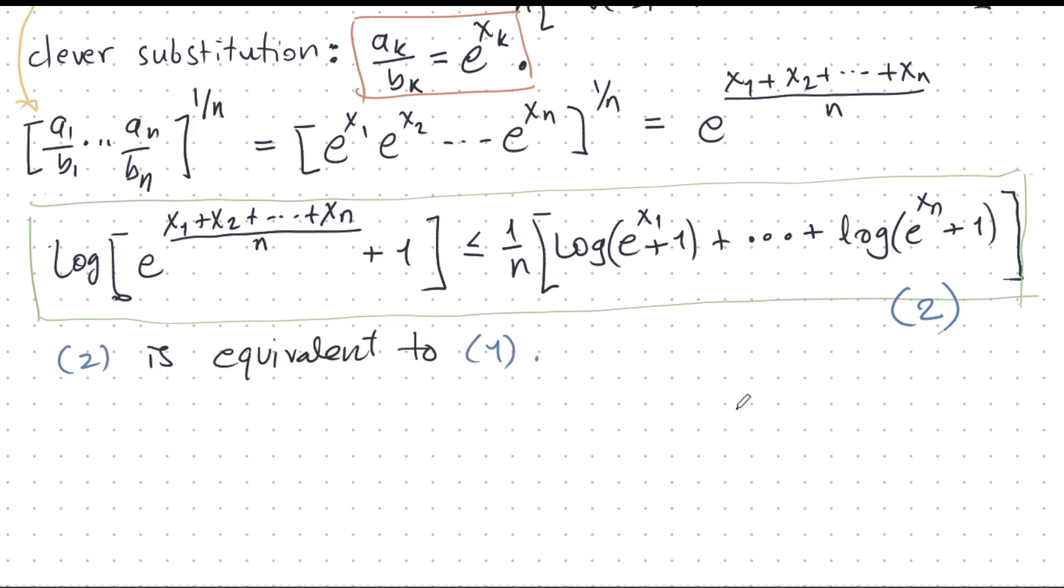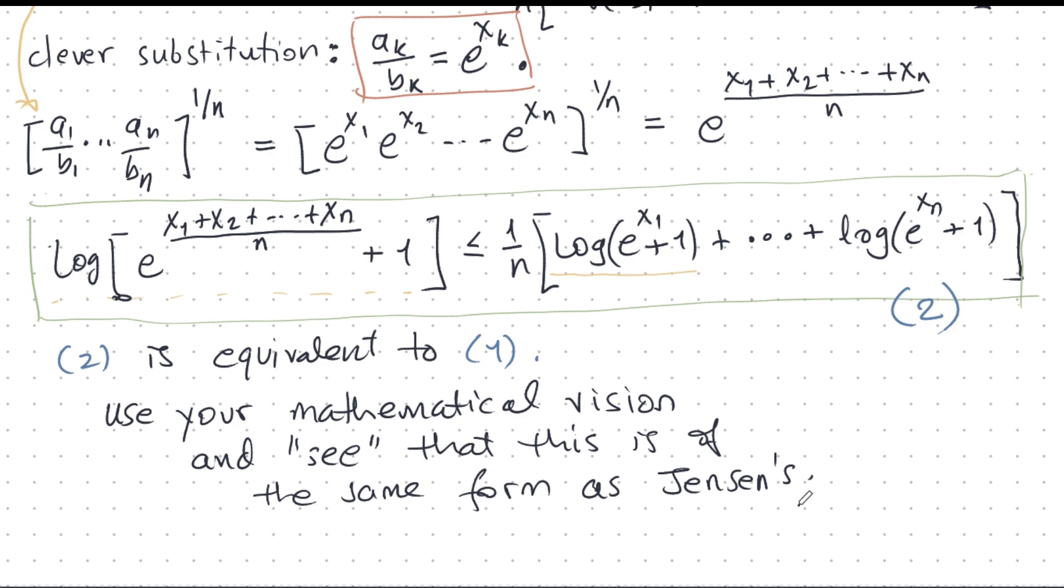This is the transformed version of inequality 1. This 2 here is equivalent to the original inequality. So, if we can prove 2, we have proved 1. Now, if you have a keen eye, you can probably guess the function involved here that would make this into a case of Jensen's inequality. You see here on this side, there's a log(e^x + 1). And here, too, you have a log e to the power of something plus 1. And that is actually the exact same form as Jensen's inequality. So, what you can do is sit back and look at this and use your vision, your mathematical imagination, your mathematical vision, and see in your mind's eye that this is actually the same thing. It's a special case of Jensen's inequality. Try to see that. But, of course, we have to prove that.